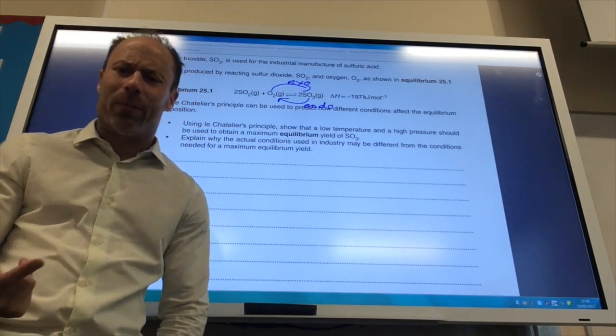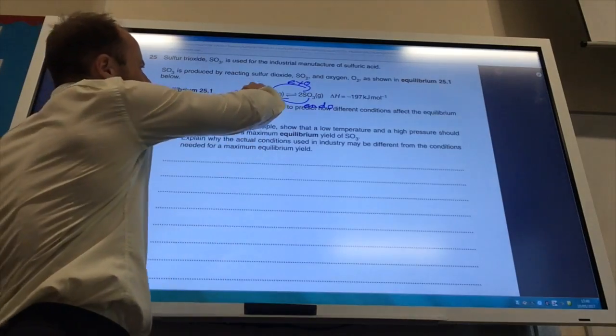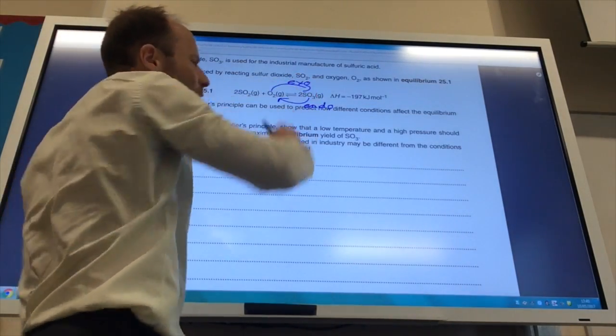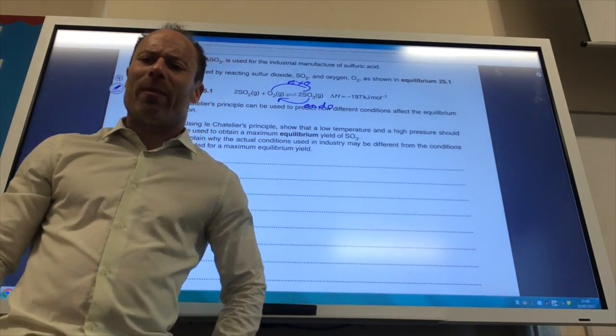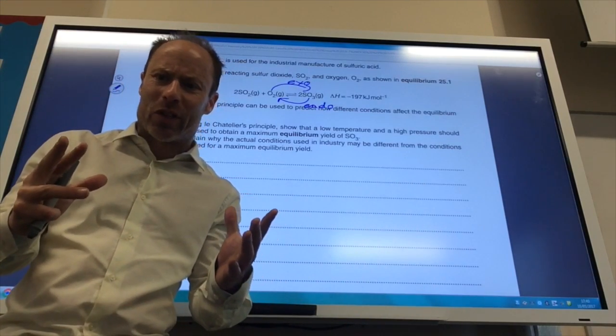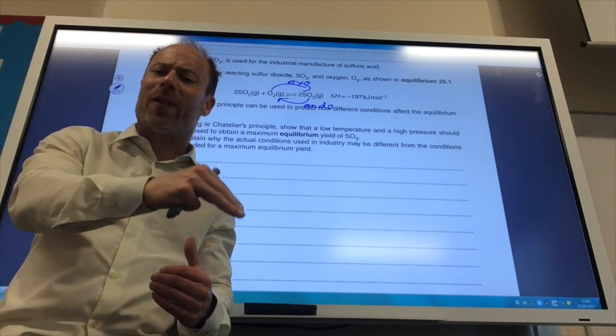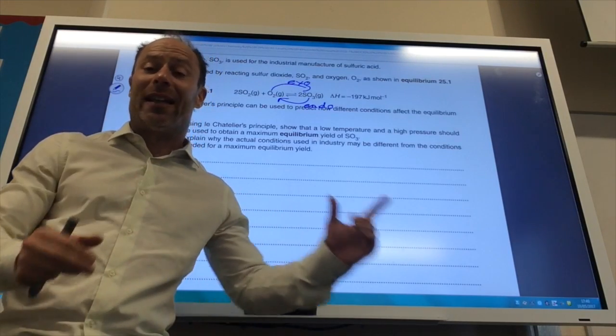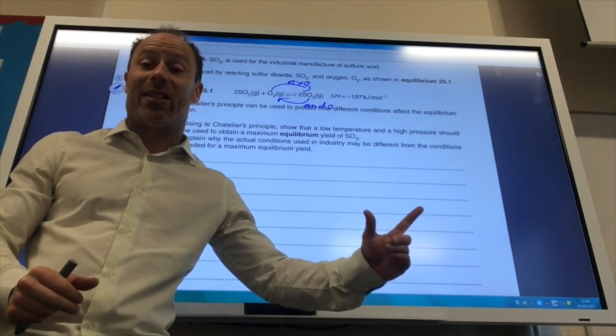Why do I want to use a high pressure? Well, let's have a look. I've got three moles of gas here, but only two moles of gas there. So remember, if I increase the pressure, the reaction tries to decrease the pressure, which will move it to the side with the fewest number of gas moles. And that's on the right-hand side towards the products.